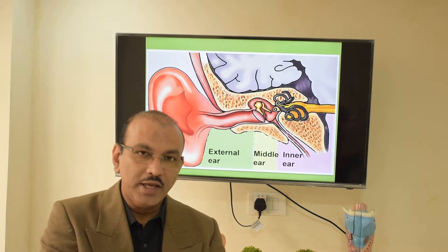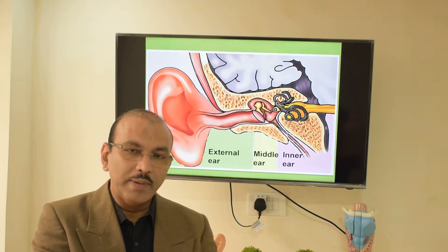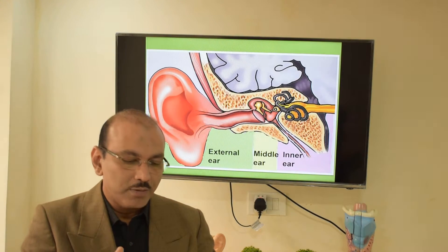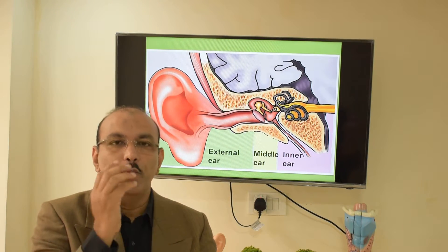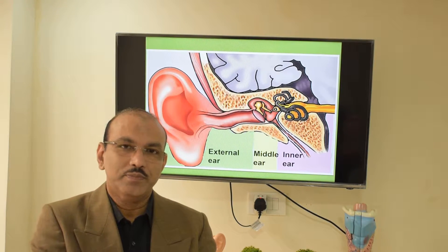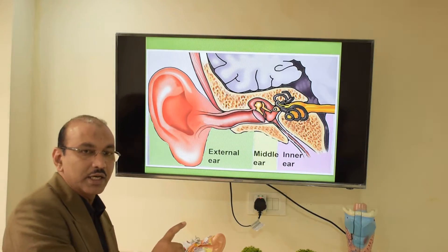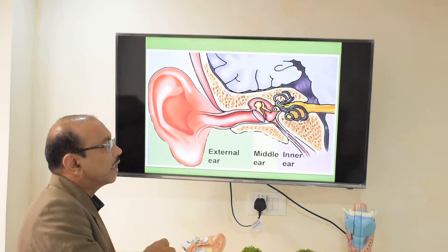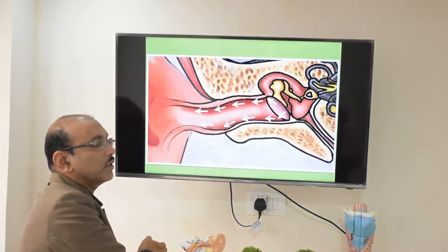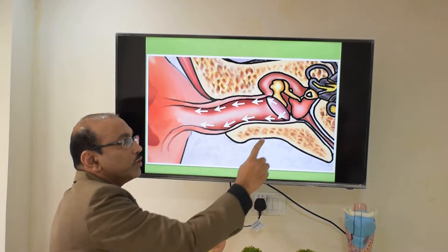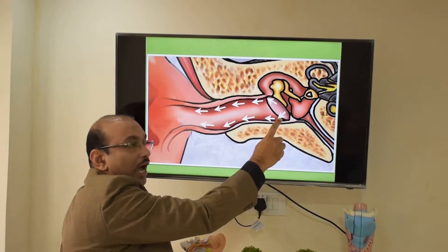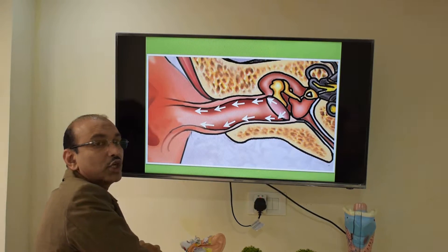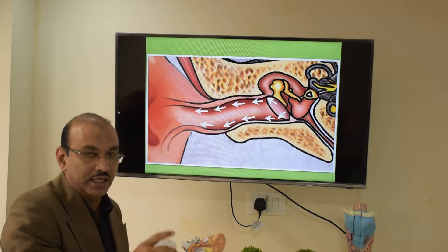In the body, the skin is replaced from below upwards, but in the ear it is not from below upwards — it is from inside out. New skin is formed from inside and pushes all the old skin outside. That's how it works in the ear.